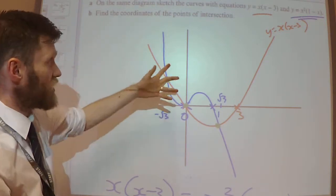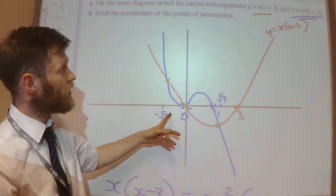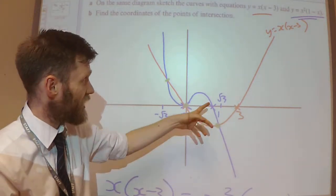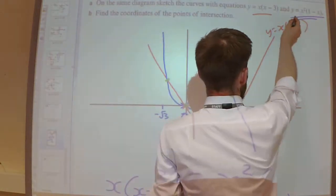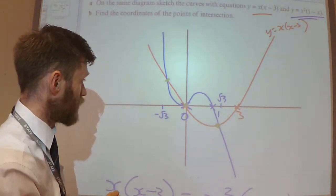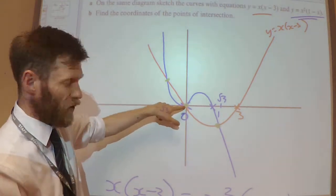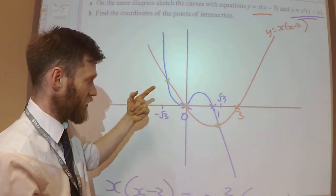It does say find the coordinates though. So I should substitute each of these into either one of these to work out the y coordinates as well. Well, this one here, I already know the y coordinate. That's 0. So I've got (0,0).